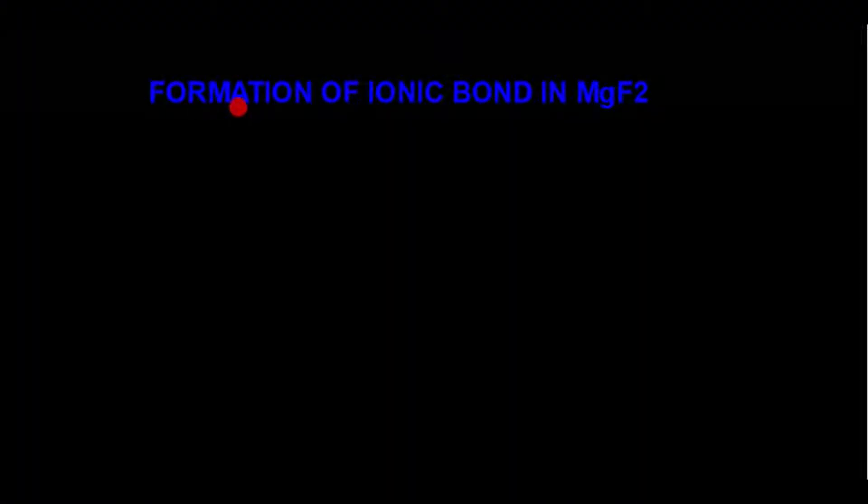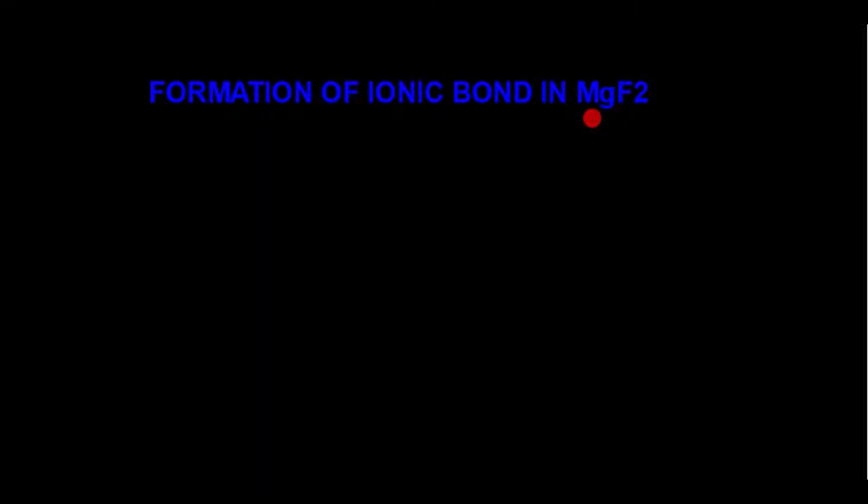In this video we will discuss the formation of ionic bond in magnesium fluoride. Magnesium is a metal and a member of group 2 of the periodic table, known as alkaline earth metals. Its atomic number is 12. Fluorine is a member of group 7 of the periodic table, known as halogens, with atomic number 9.